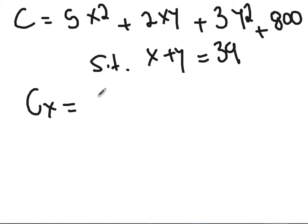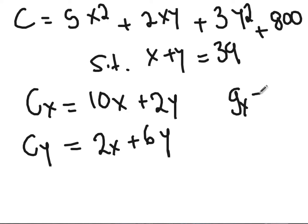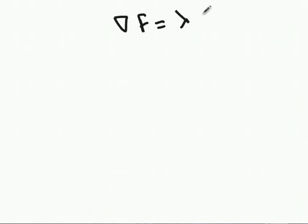Now we find the partial derivatives of the main function: the partial with respect to x is 10x plus 2y, and the partial with respect to y is 2x plus 6y. We also find the partial derivatives of the budget constraint: g with respect to x equals 1 and g with respect to y equals 1. Now that we have the four partials, we can use grad f equals lambda times grad g.